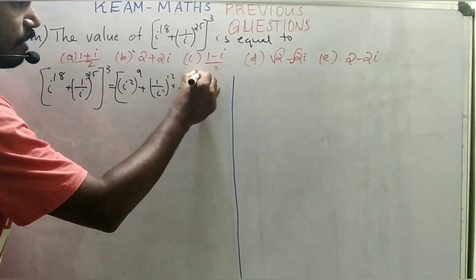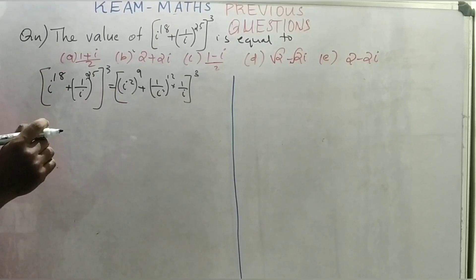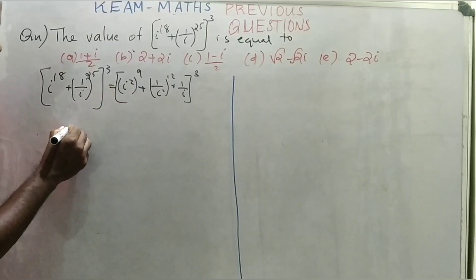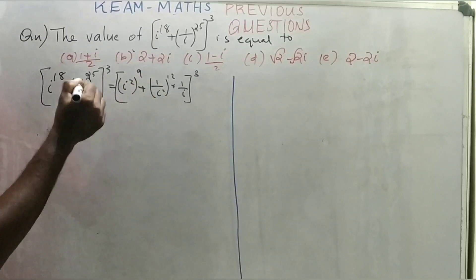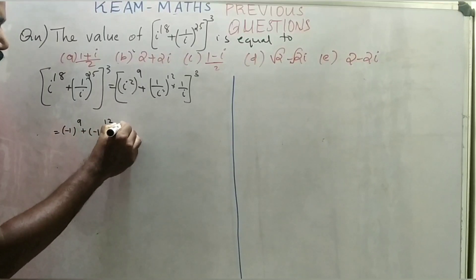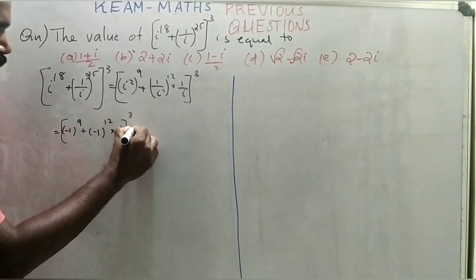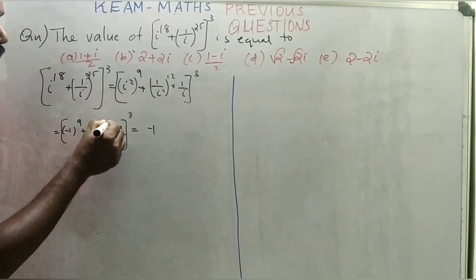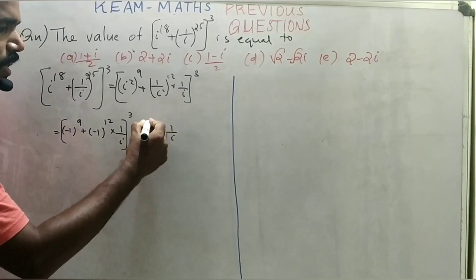Since i² = -1, we have i^18 = (-1)^9 = -1. And 1/i² = 1/(-1) = -1, so (-1)^12 = 1. Therefore the expression becomes (-1 + 1/i) the whole cube, which equals (-1)^12 · (1/i)^3 ... giving 1 · (1/i)^3.